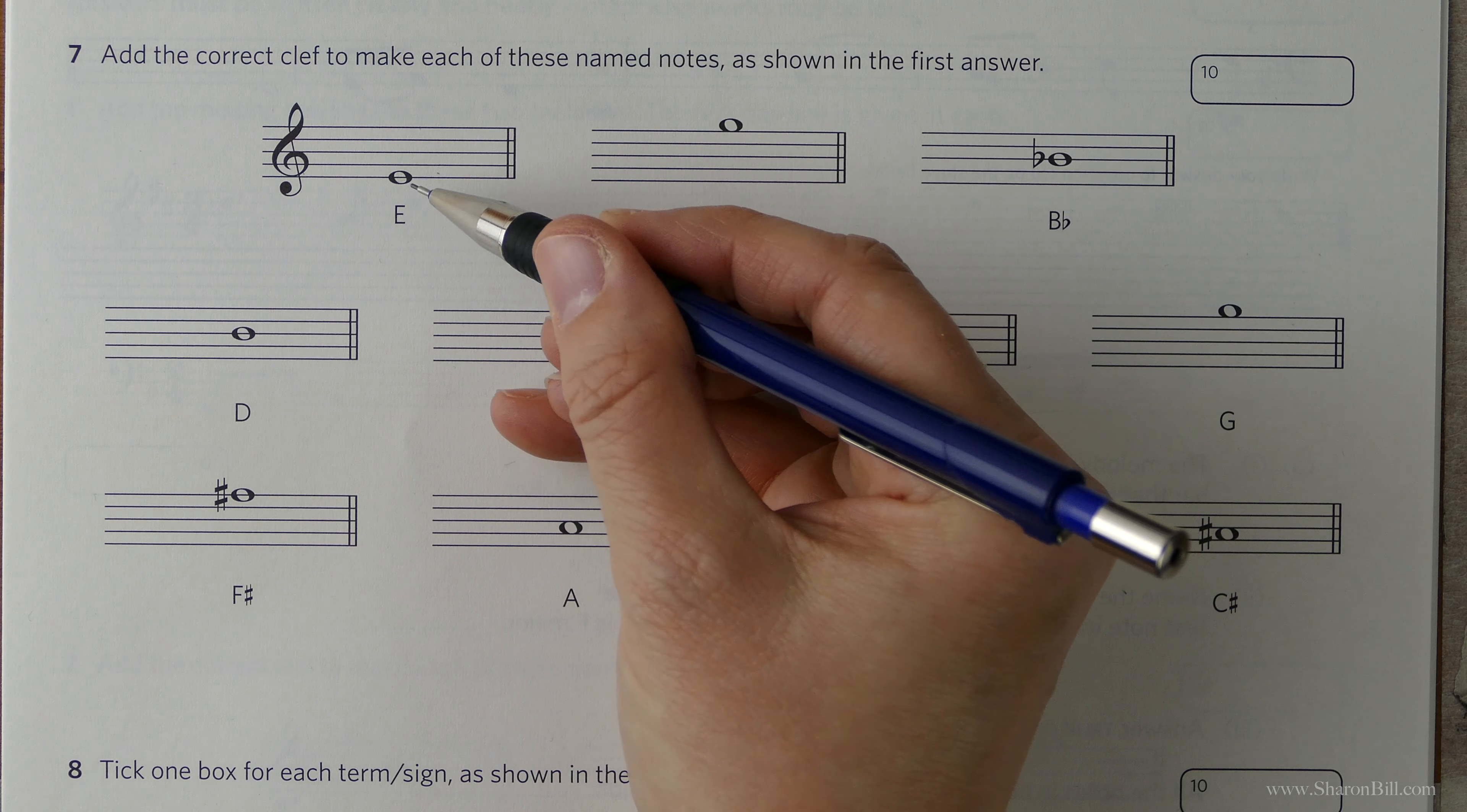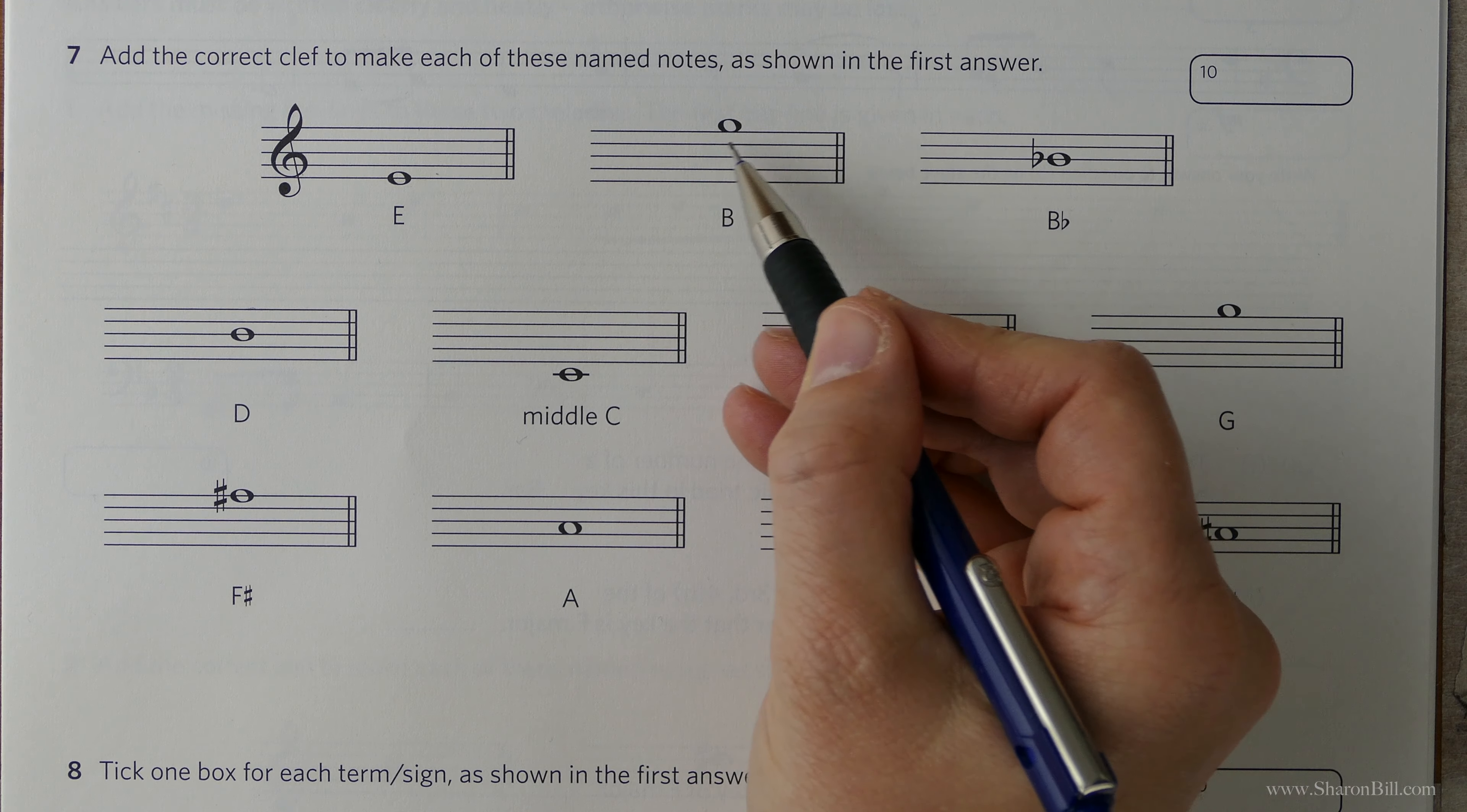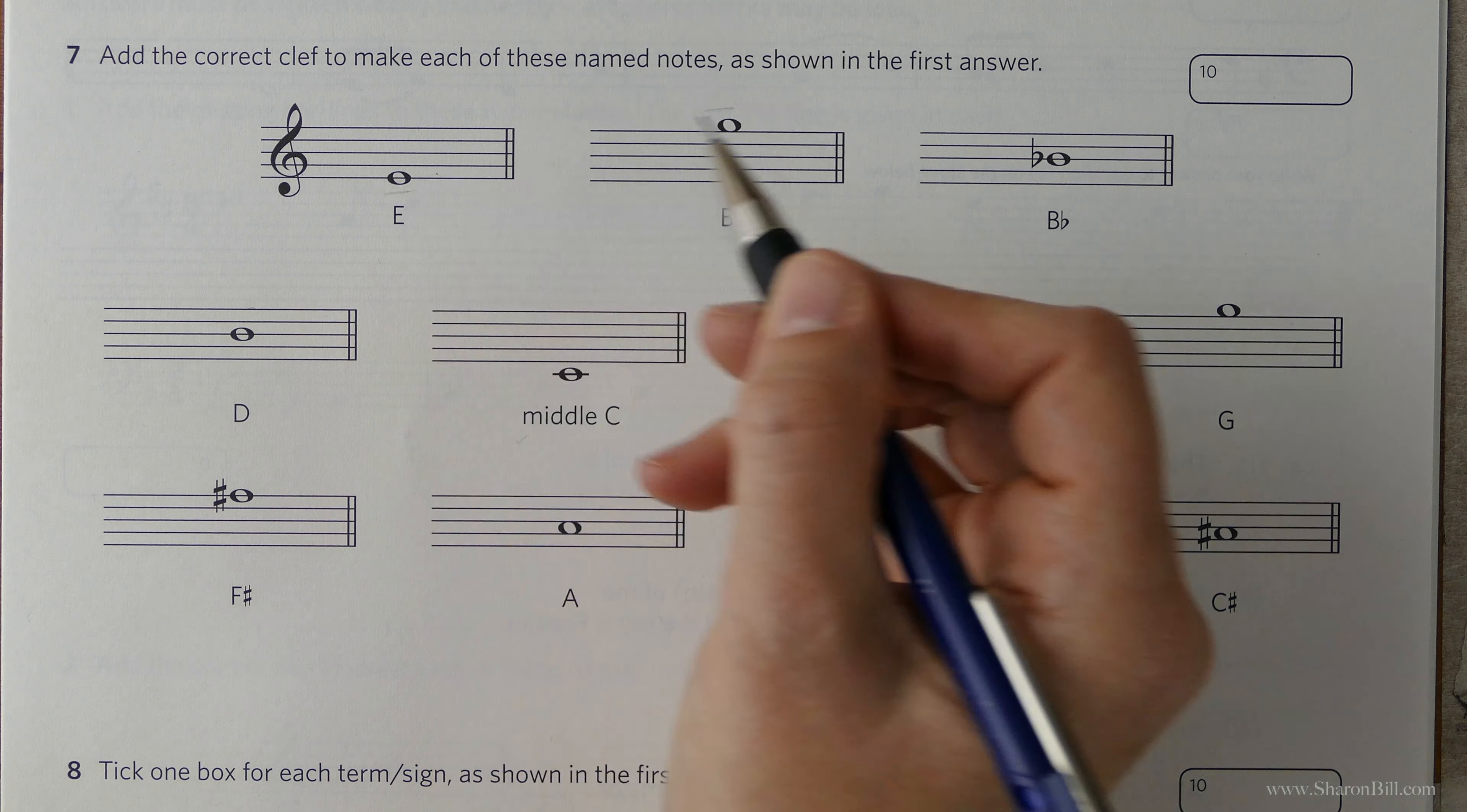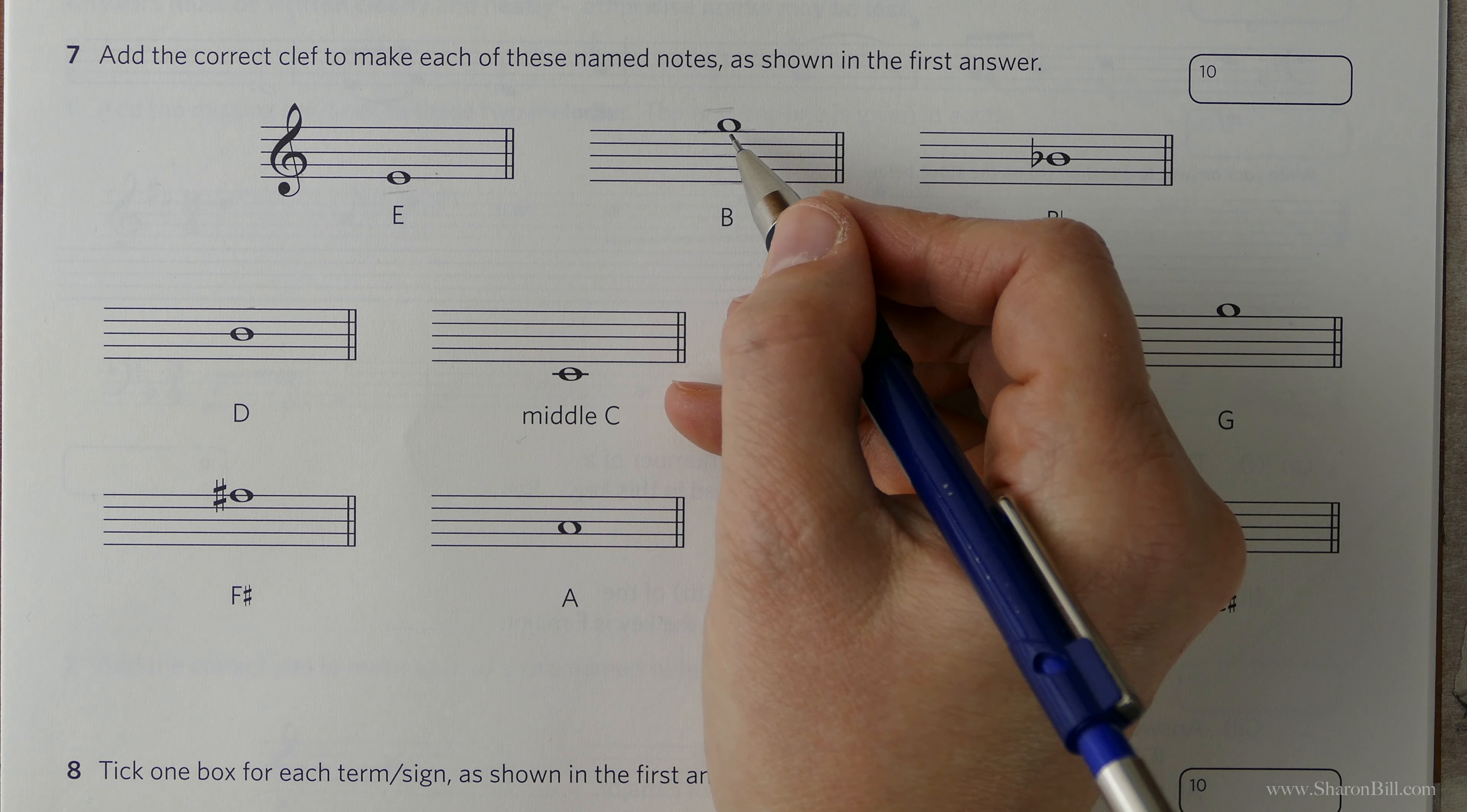And so the bass clef is, instead of being Every Good Boy, it starts off Good Boys Deserve Football Always. And instead of being FACE, it's as if it goes ACE, All Cows Eat Grass. Everything's dropped down a line or a space. So let's look at these. So we know this is an E. Now here we're already off the lines and spaces for the poems, and we now need to think about it in terms of, if this is middle C in the bass clef, middle C is at the top of the bass clef, the bottom of the treble clef. If this is middle C, one step below that would be B, so that confirms that that's bass clef.